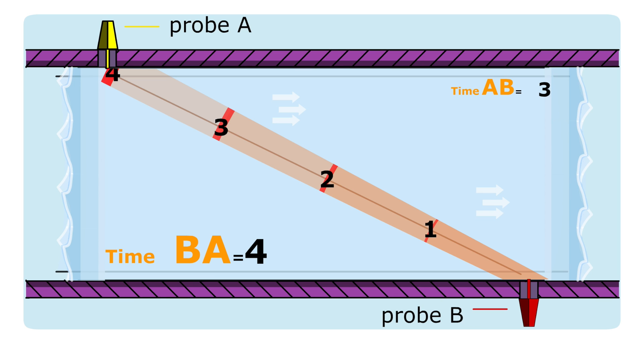Then, the device sends another ultrasound this time from the red probe and measures the time needed for the ultrasound to reach the yellow probe. Therefore, the two travel times are different. The travel time against the stream is longer than the travel time with the stream.